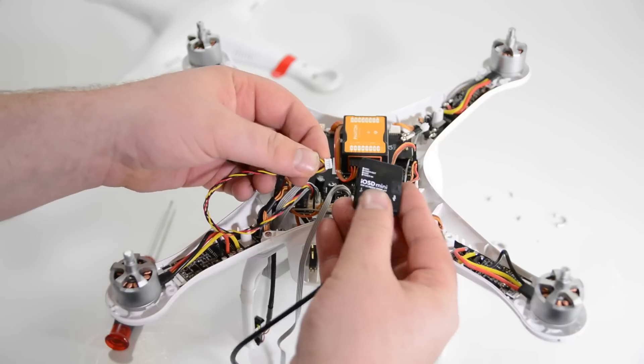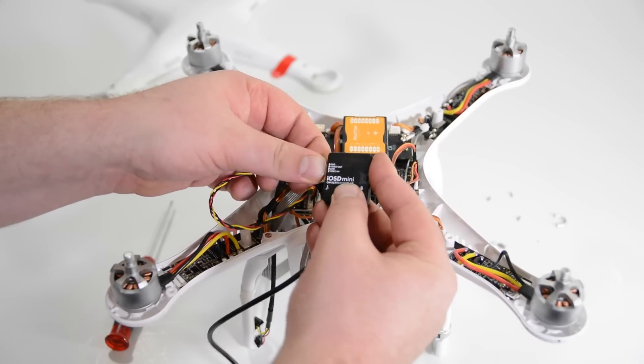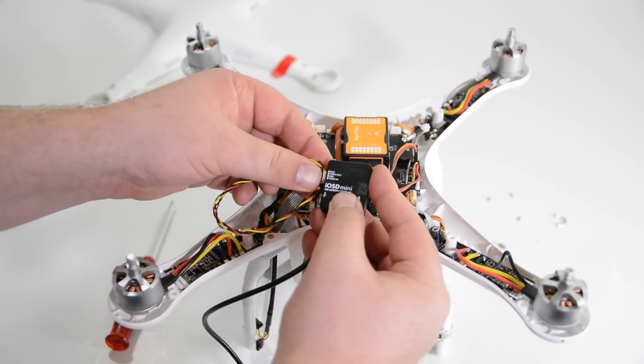Now we'll need to take the other lead off the all in one cable and plug that into the iosd mini.